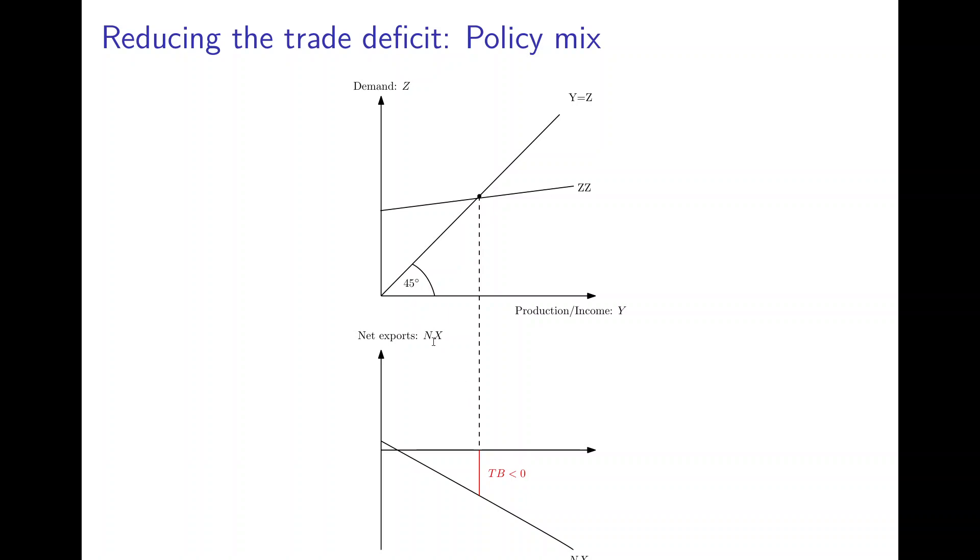Now this is drawn in a way that net exports are negative at equilibrium, so the country has a trade deficit. What can such a country do to reduce the trade deficit? Well, provided that the Marshall Lerner condition is fulfilled, the country could devalue its currency to increase net exports from NX to NX prime.